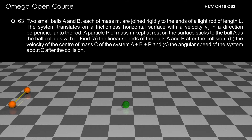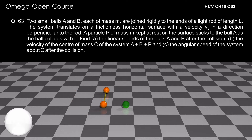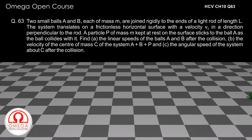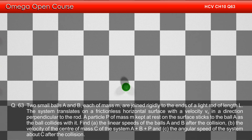Two small balls A and B, each of mass M, are joined rigidly to the ends of a light rod of length L. The system translates on a frictionless horizontal surface with velocity v0 in a direction perpendicular to the rod. A particle P of mass M kept at rest on the surface sticks to ball A as the ball collides with it.